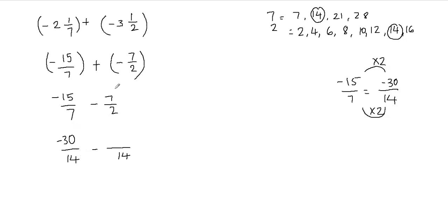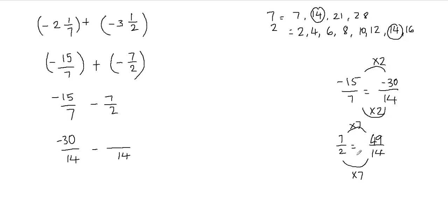That means I can replace negative 15 over 7 with negative 30 over 14, because these two are equal fractions. The same thing I have to do with this fraction. I have 7 halves and I want my new denominator to be 14. How do I get from 2 to 14? I can multiply my denominator by 7. Now if I'm multiplying my denominator by 7, I will also have to multiply my numerator by 7. So 7 times 7 is going to give me 49. So I can replace 7 halves with 49 over 14.